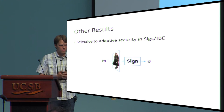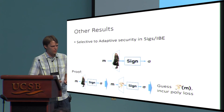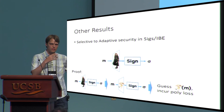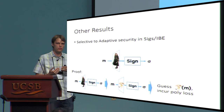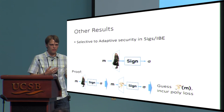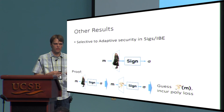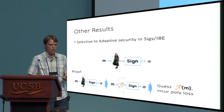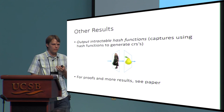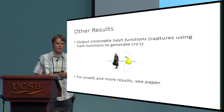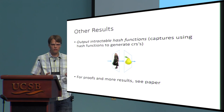Some other results we get from ELFs: selective-to-adaptive security conversion, which previously required random oracles, can now use an ELF instead. The construction just hashes the message using the ELF before signing with a selectively secure signature scheme. In the security proof, switching to a lossy mode ELF is indistinguishable to the adversary, and because the lossy ELF has only polynomial image size, we can guess the output that gets signed, incurring only a polynomial loss in security. We also give a definition of output intractability for hash functions, capturing the case of generating common reference strings where no one knows a trapdoor, with the construction simply composing an ELF with a pairwise independent hash function.